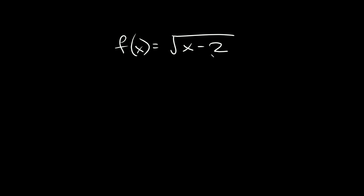Here we have a negative two, so we would actually shift our graph positive two spaces to the right. You basically just do the opposite. And it would be the same thing for a cube root function, a fourth root, fifth root — all those graphs would simply be translated two units to the right.